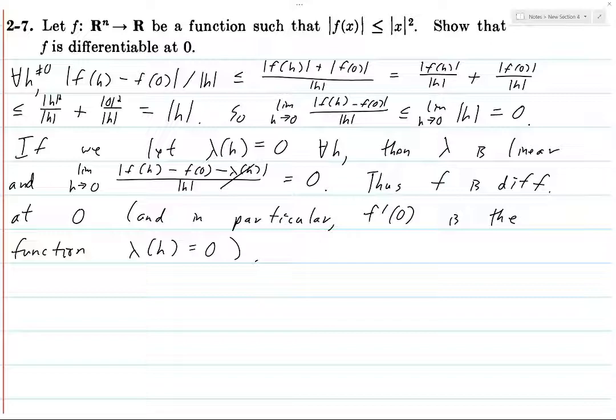So this exercise would have been easier if they would have said, show that f is differentiable at zero, and the derivative is the zero function, the linear function which is constantly zero. But we weren't given that information, but luckily, given everything that we had, we were able to recover that.